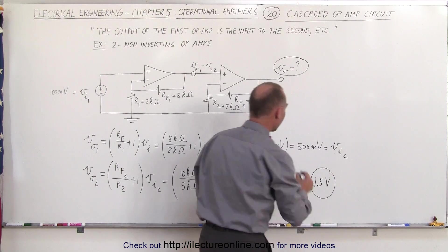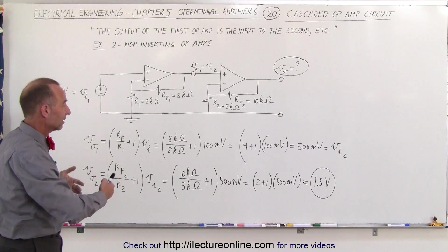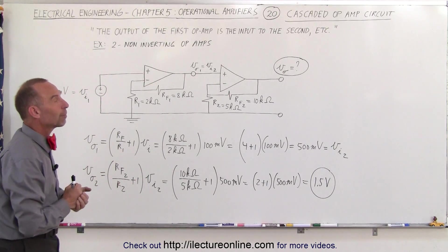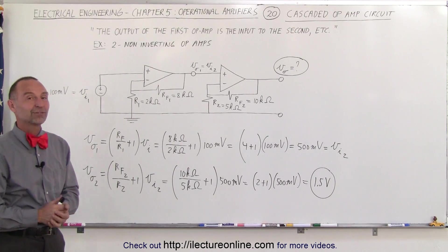So that's the output of the second op-amp, which becomes the output of the entire circuit. Again, a very nice straightforward example of what a cascaded op-amp circuit is. And that's how it's done.